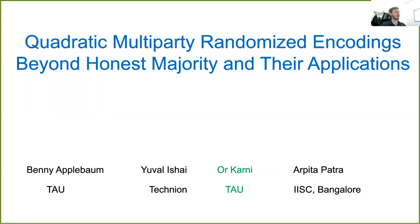This is the abstract video for our upcoming Crypto 2022 talk about quadratic multiparty randomized encodings that go beyond the honest majority privacy threshold and some of their applications.